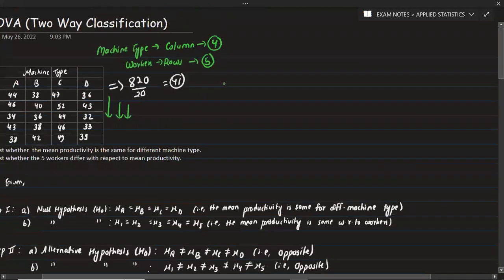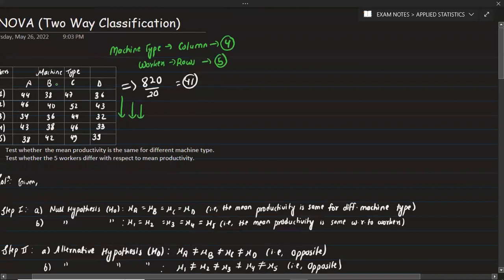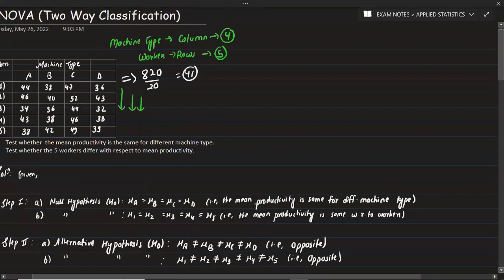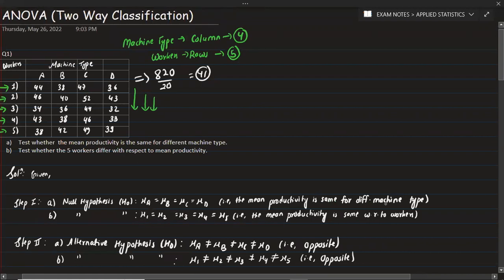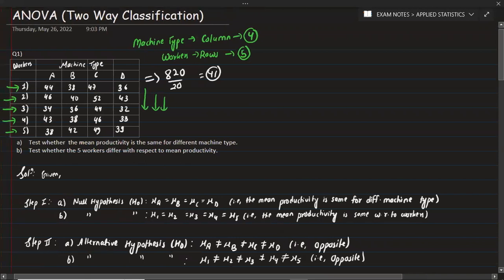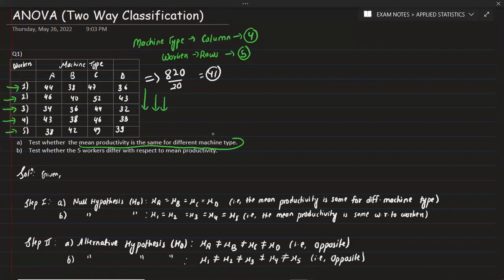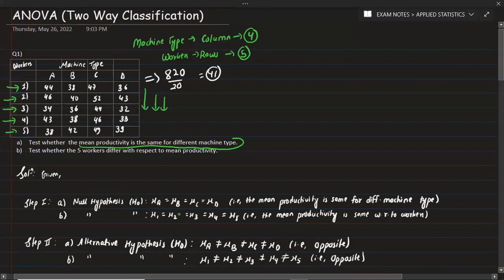The null hypothesis states that the mean productivity is the same for all machine types. We also test whether the mean productivity is the same for different workers. The null hypothesis for the row effect is stated separately. In the second part, we write the null hypothesis for rows.